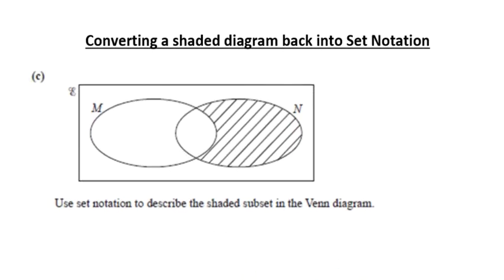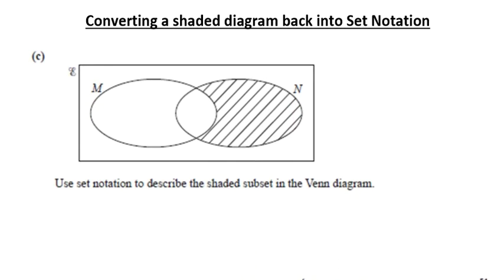Once we're done with some of those examples, let's try the other way around. So let's say now you have the shaded region given and what you want to do is find out what is the set that represents this Venn diagram. Let's see how we can think about such problems now.